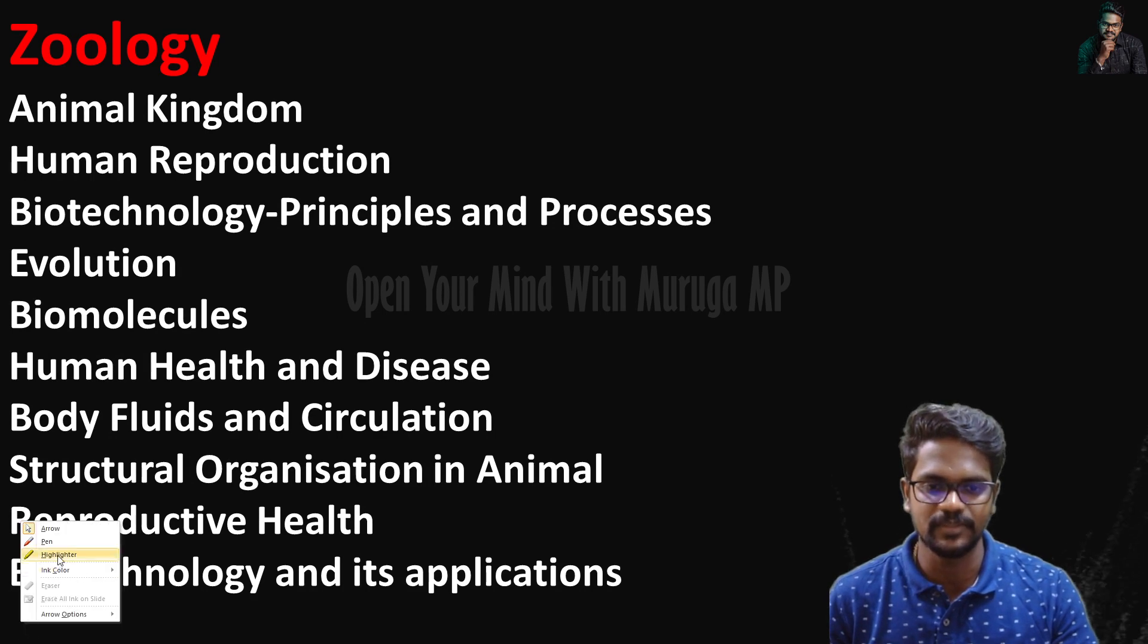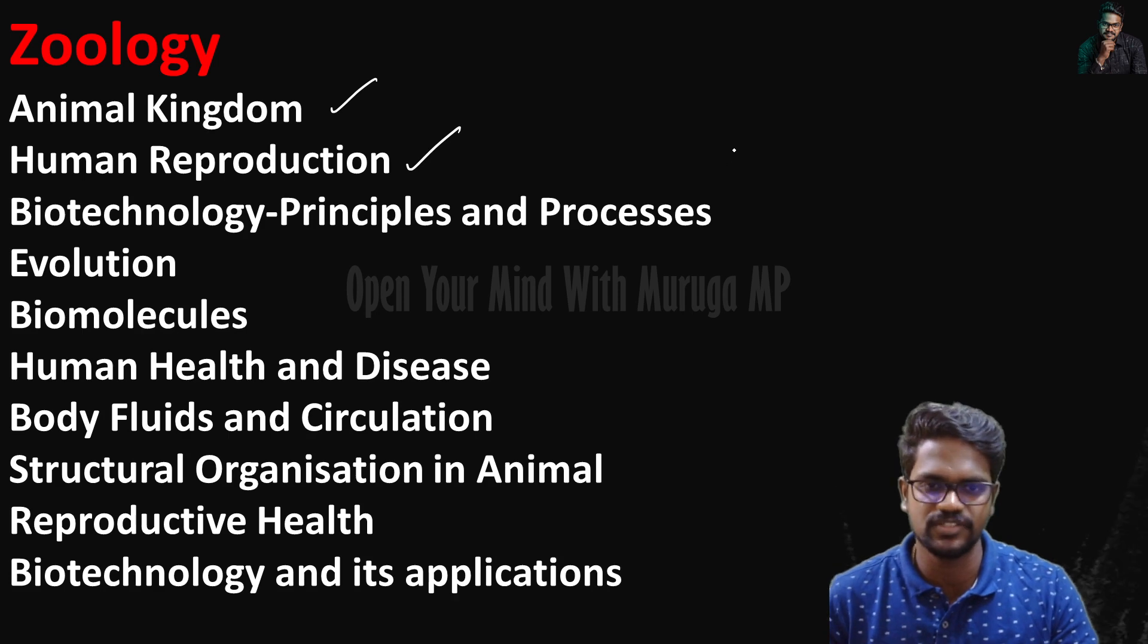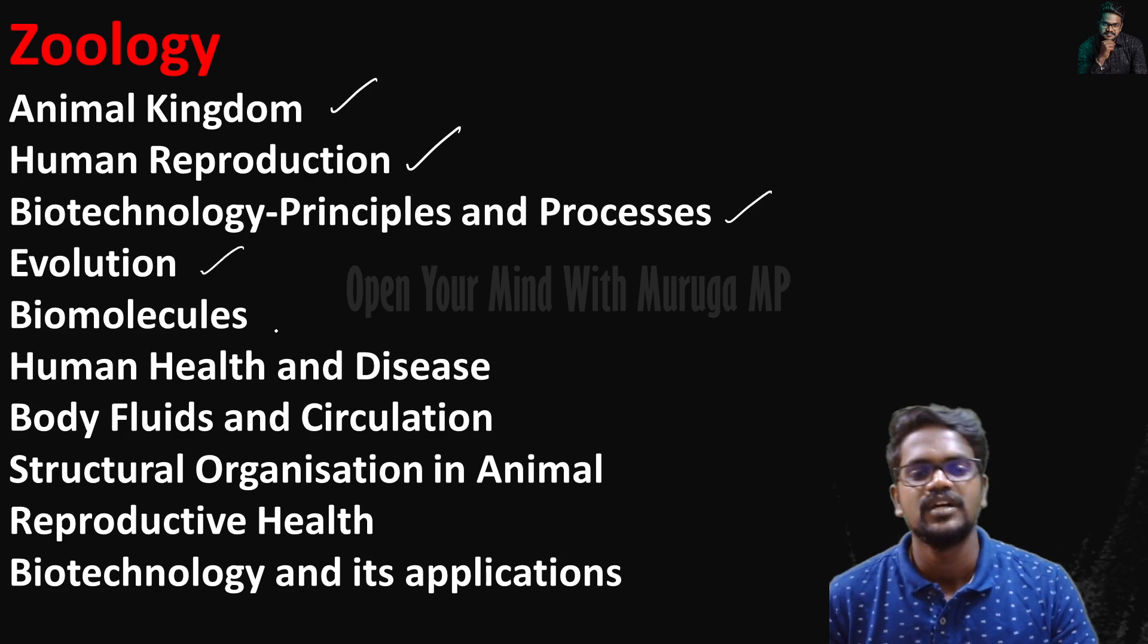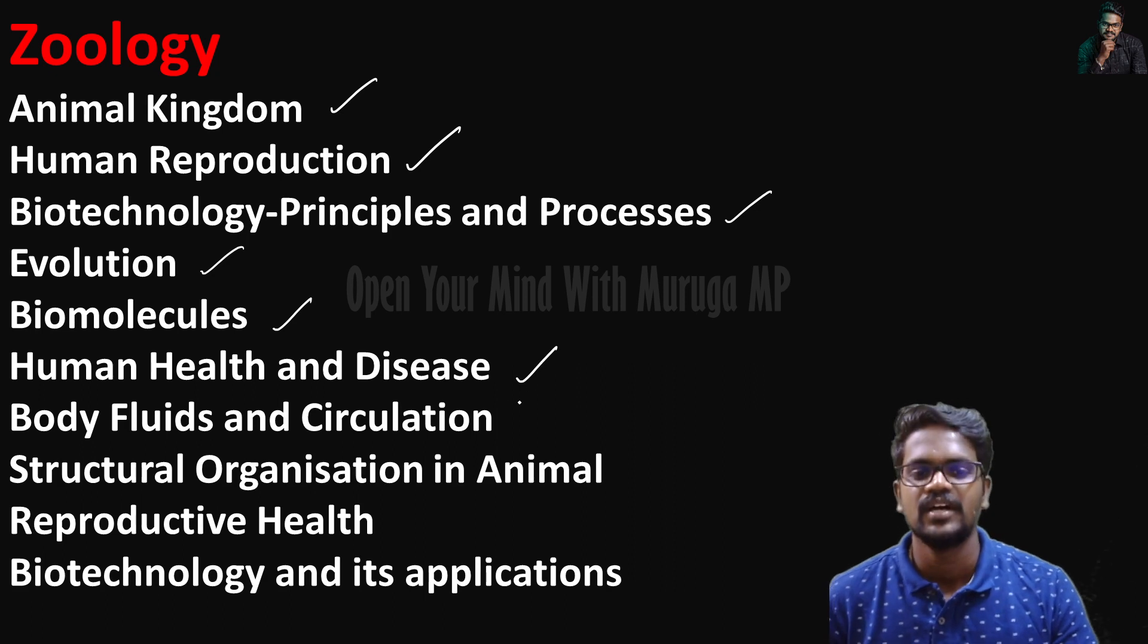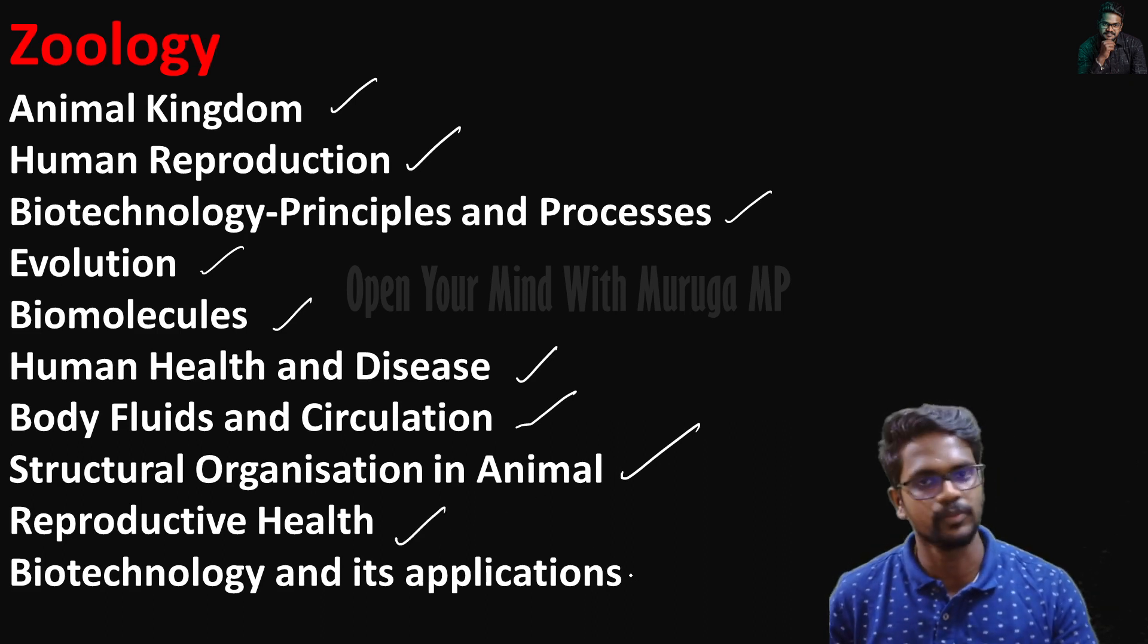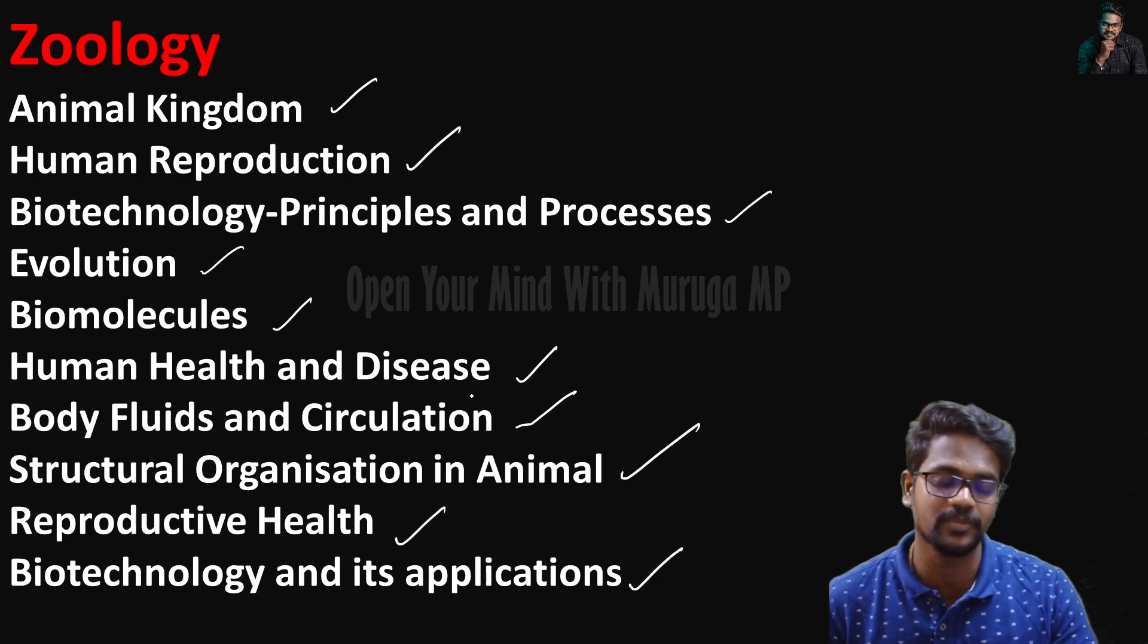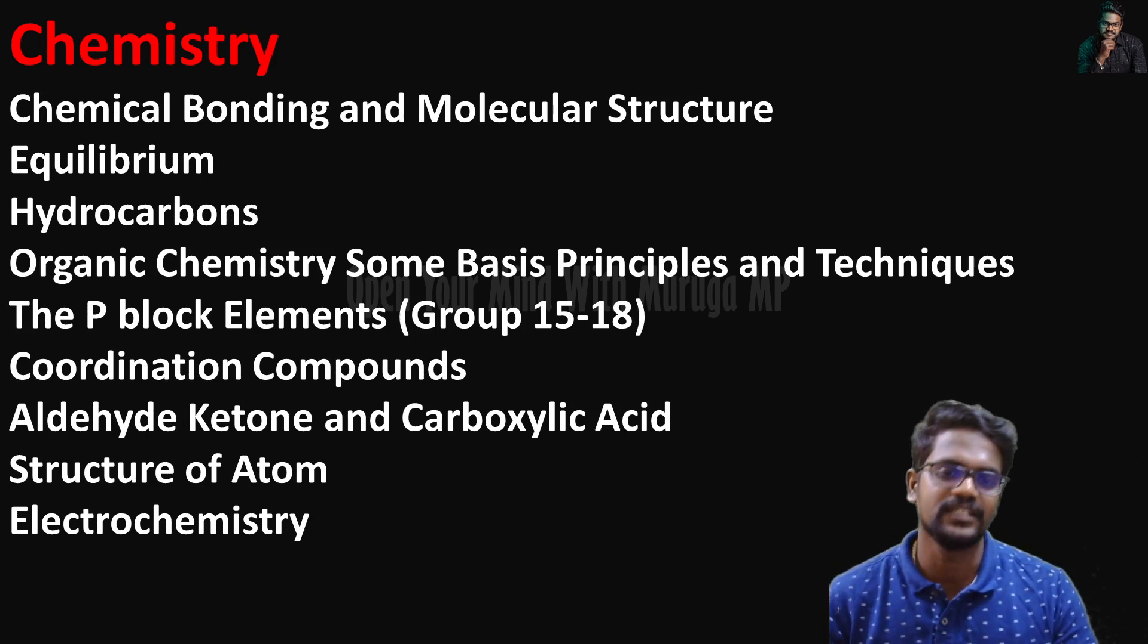For zoology, animal kingdom, human reproduction is very high weighted, biotechnology principles and processes is very important, evolution, biomolecules, human health and diseases, body fluids and circulation, structural organization in animals, reproductive health is very important, and biotechnology and its applications. These are very important chapters for botany and zoology.